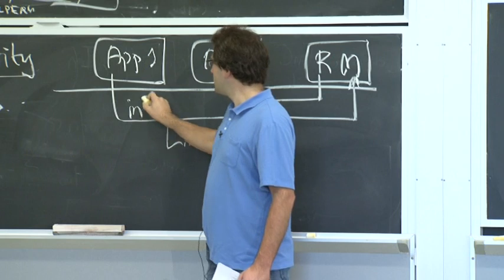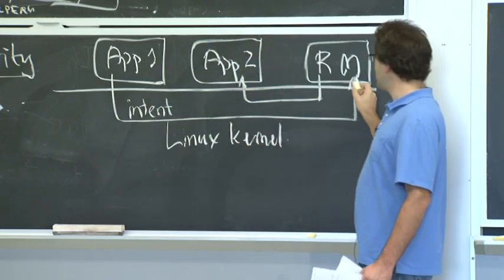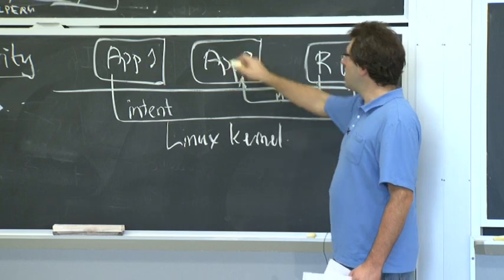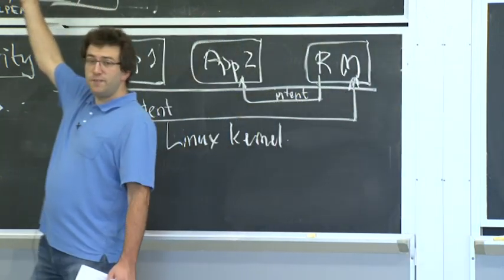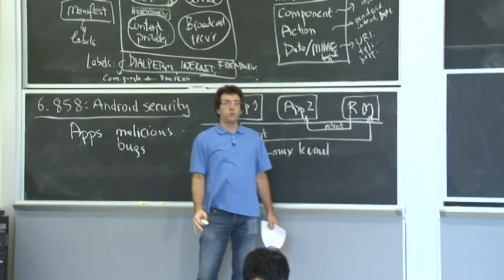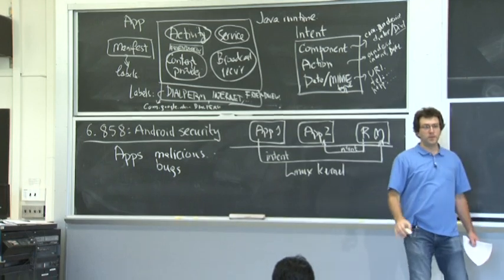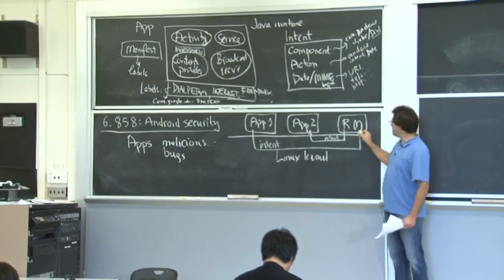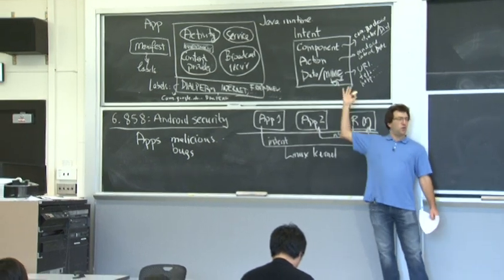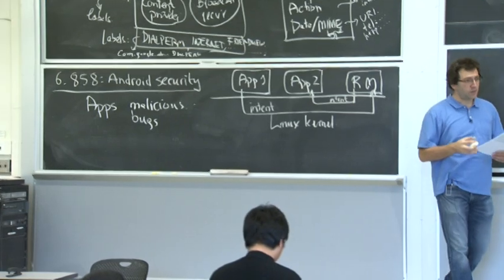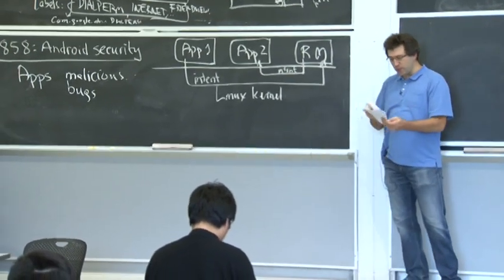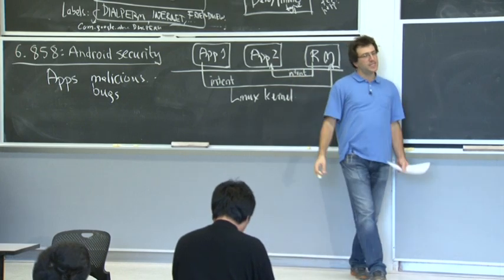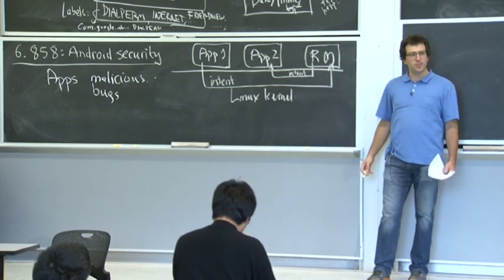The reference monitor is hugely importantly in charge of checking all the permissions represented by the labels. You wouldn't put the checks in the sender because a malicious application isn't guaranteed to do the correct checks for us. What about doing checks on the receiver side in app two? A big part of using the reference monitor is app bugs — you don't want silly mistakes by the application developer to compromise security. Factoring out common functionality into code the developer doesn't have to worry about is a good principle.